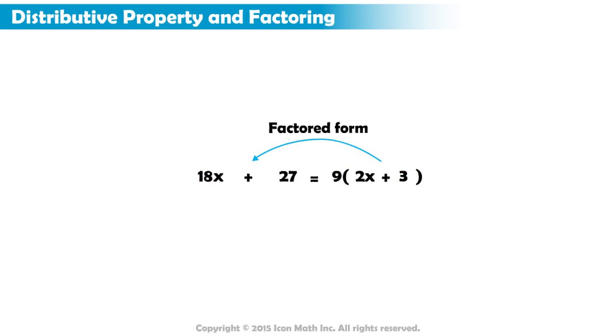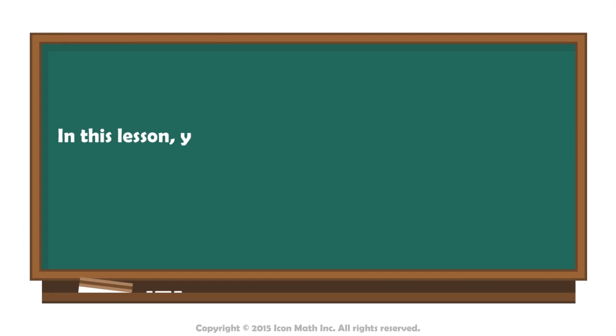We can check this by distributing 9 into the sum. If we distribute the 9 to both 2x and 3, we get back 18x plus 27. In this lesson, you learned how to factor an expression.